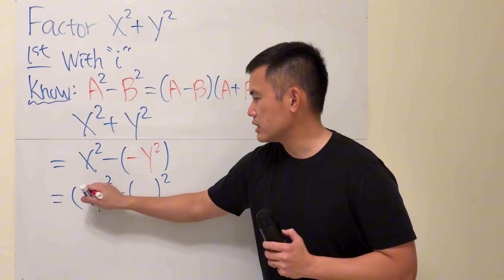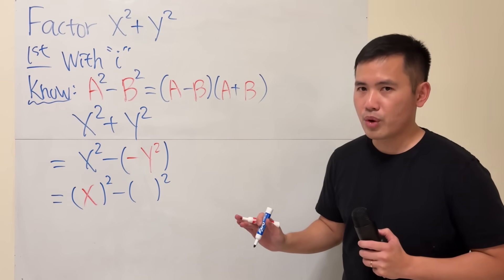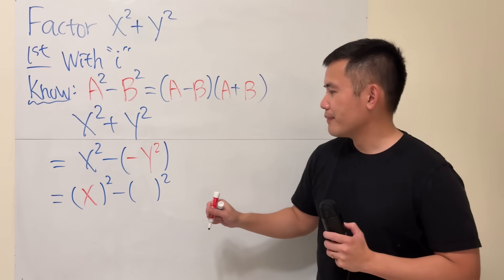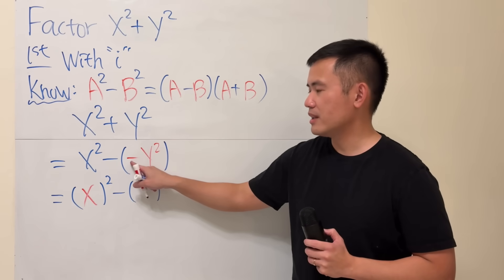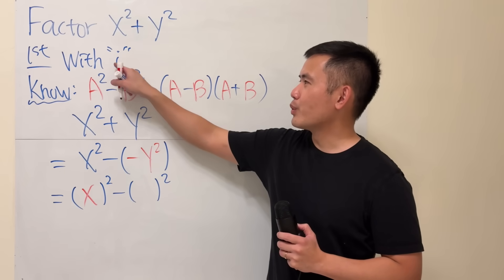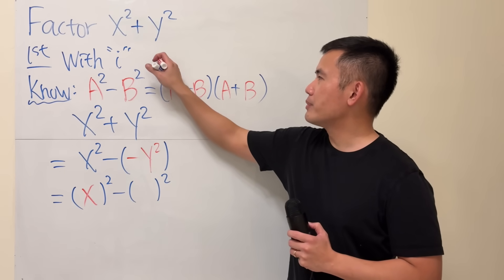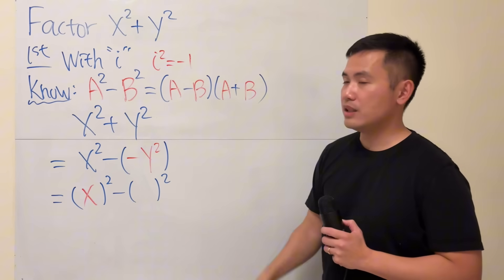x squared, I can just enter that as x squared. No problem. Now, what square will give us negative 1? Well, that's where we have to use the i, because by definition, i squared gives us negative 1.